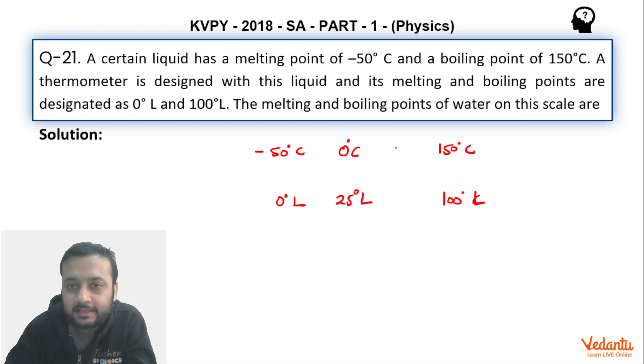Similarly, if you have 100 degree Celsius, this is the boiling point of water. So yahaan se 0 se 100, we can say that 100 degree Celsius ka rise hua hai. Correspondingly yahaan pe 50 degree ka rise hoga. 25 se bol sakte hai 75 degree L pe answer aa jayega.